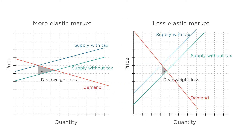And in less elastic markets, taxes do not cause much of a reduction in mutually beneficial trades. Therefore, the taxes are less inefficient. We can see this in the graph as a smaller deadweight loss.